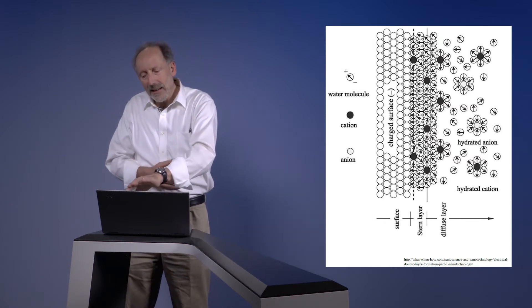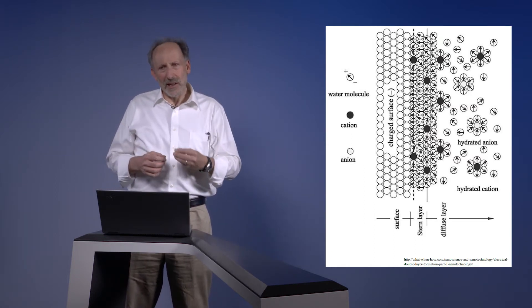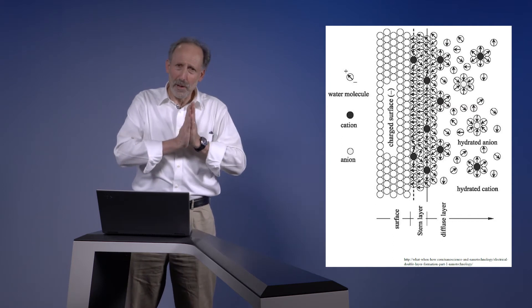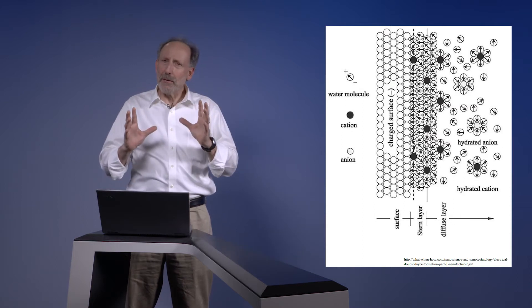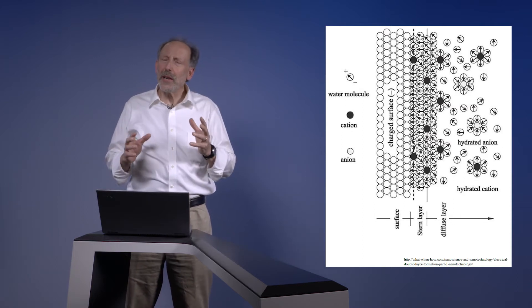Now you can see in this diagram that the black dots are the cations. And some of the cations are absolutely in contact with the mineral surface. But many of them are depicted having water surrounding them. Those are hydrated cations.